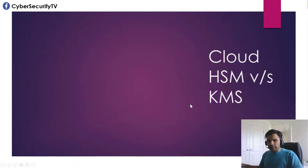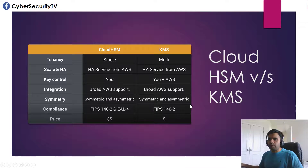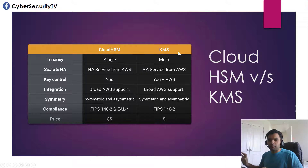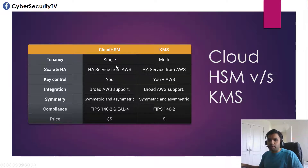You might be thinking: cryptographic operations and key storage are also offered by KMS — the Key Management Service — so what's the difference? HSM is single-tenancy while KMS is multi-tenancy. KMS can have keys stored by multiple tenants within one box, while HSM is dedicated. Both services are highly available and managed by AWS, so you don't need to worry about availability.